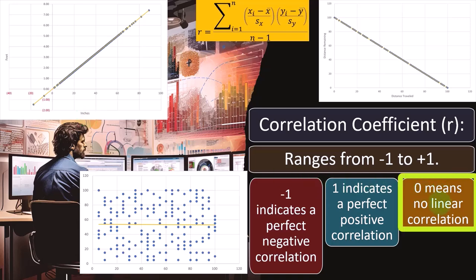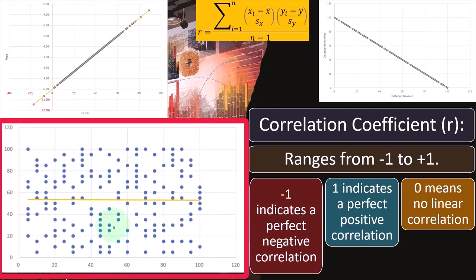And then a zero means no linear correlation. So in this case, we have a bunch of data dots here. But when we draw a trend line between them, it's almost perfectly flat. So a perfectly flat trend line would indicate that there's not a correlation between them. And then we could see a trend line between them.